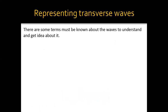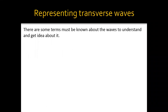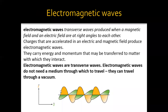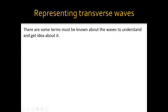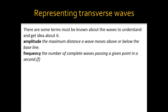Now, how can we represent transverse waves? First, we need to know some physical terms. The first one is amplitude. Amplitude means the maximum distance a wave moves above or below the baseline. As you see, this part above or below the baseline — that is the amplitude.